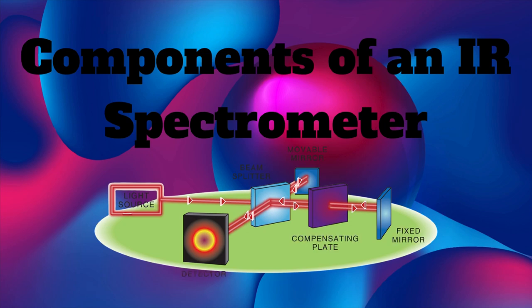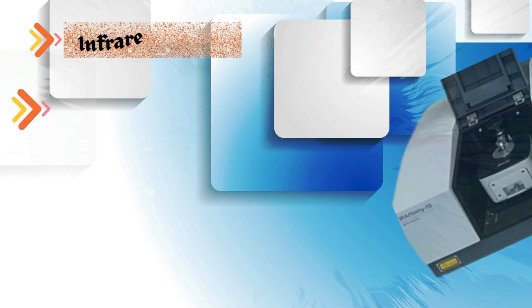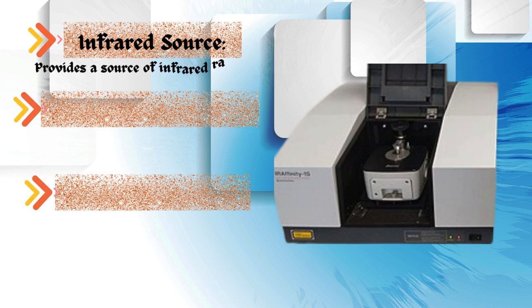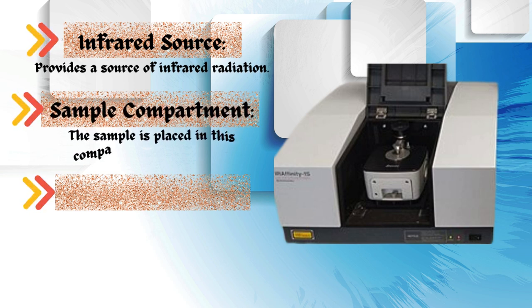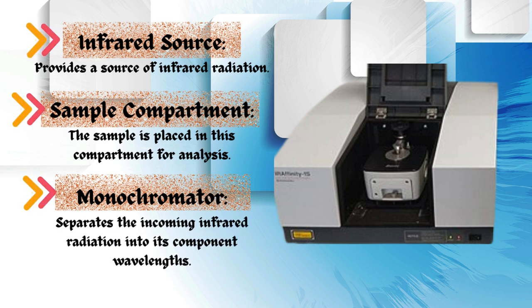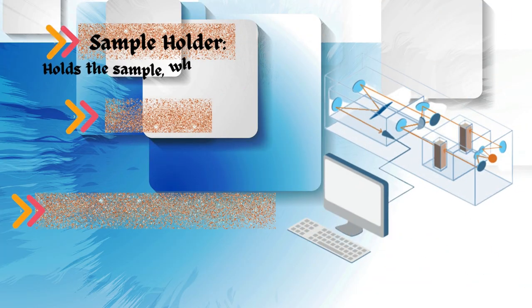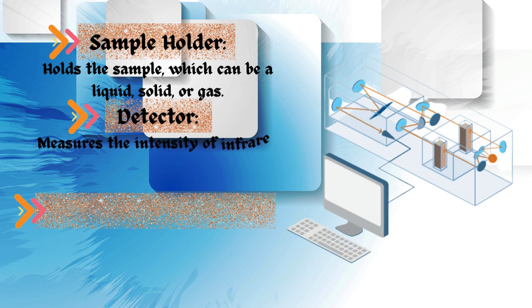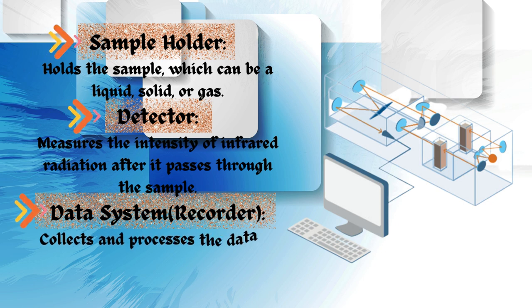Components of an IR spectrometer. Infrared source provides a source of infrared radiation. Sample compartment: the sample is placed in this compartment for analysis. Monochromator separates the incoming infrared radiation into its component wavelengths. Sample holder holds the sample, which can be a liquid, solid, or gas. Detector measures the intensity of infrared radiation after it passes through the sample. Data system recorder collects and processes the data to generate the IR spectrum.